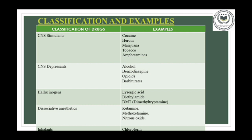Next, CNS depressants. As the word indicates, these kinds of drugs will slow down the operation of the brain and the body. Some of the examples are alcohol, nicotine, cocaine, caffeine, barbiturates, etc.